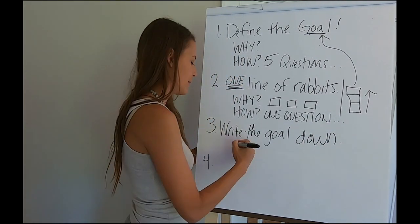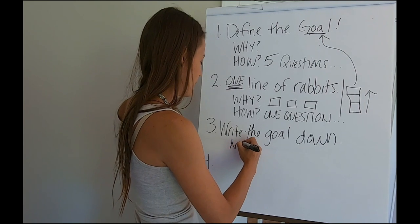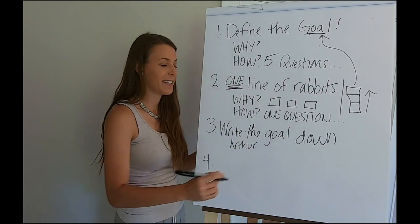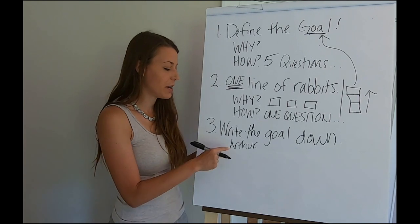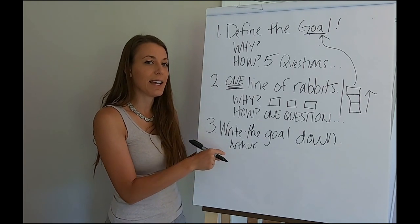My goal looks something like this. I can simplify it. One line of rabbits. My Arthur line of rabbits.